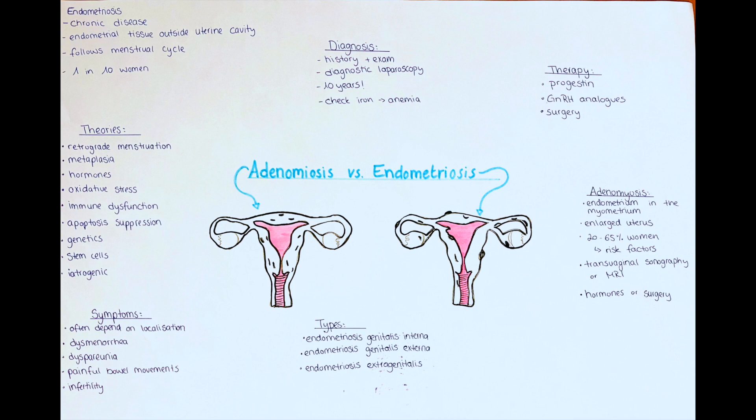The second to last theory says that there is an immune dysfunction which prevents the elimination of menstrual tissue from the body and so promotes the implantation of the tissue at other sites. The last theory is the stem cell theory, where it is thought that undifferentiated cells develop into endometrial tissue and regenerate and proliferate into cell masses.